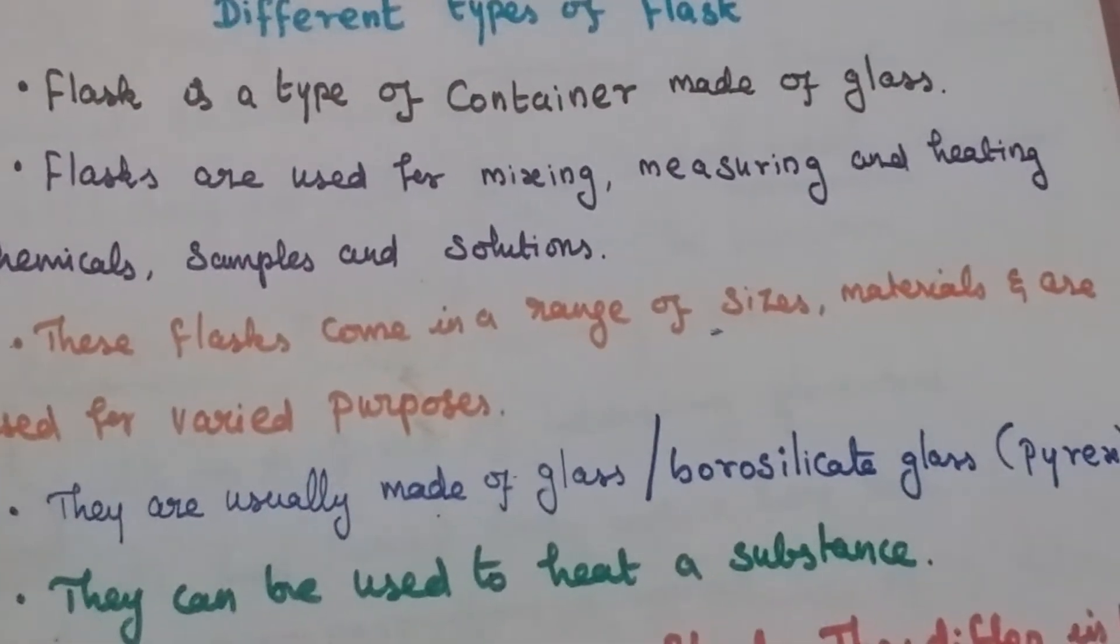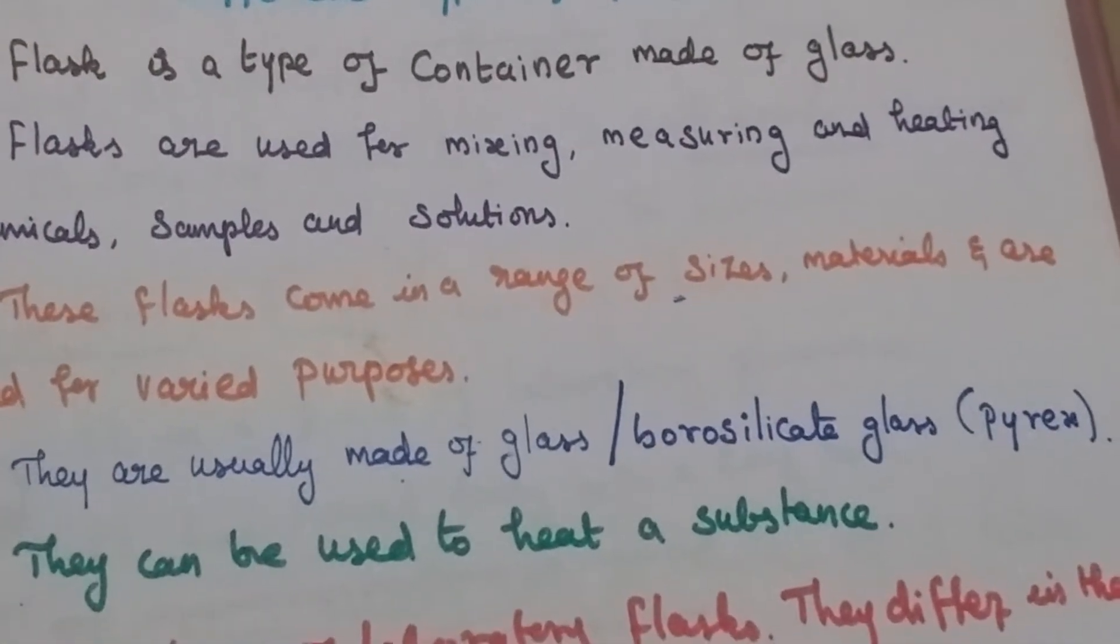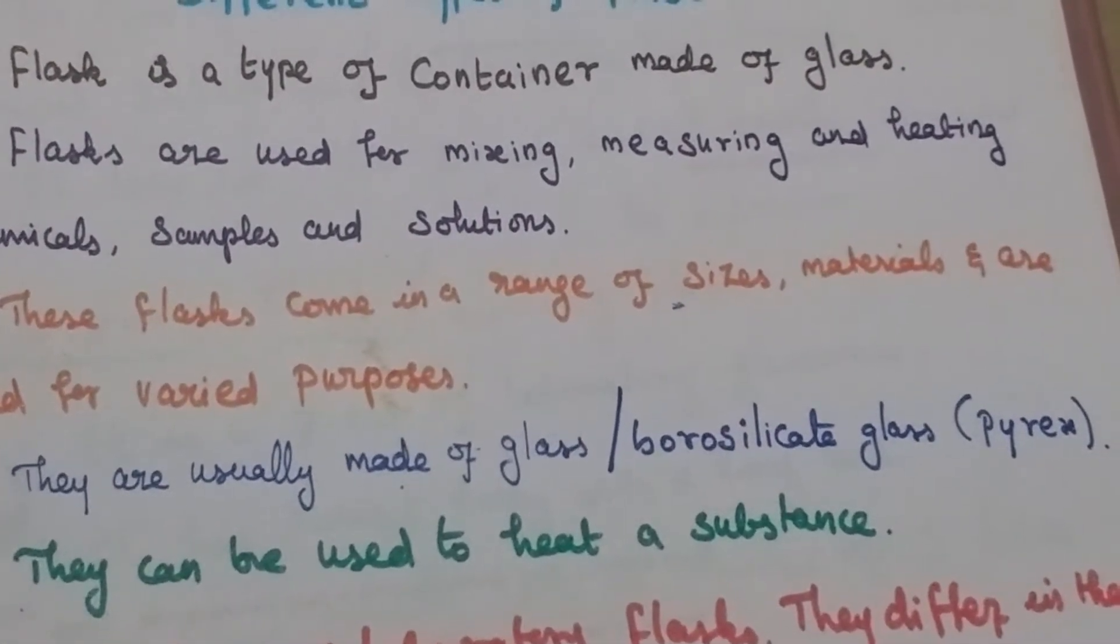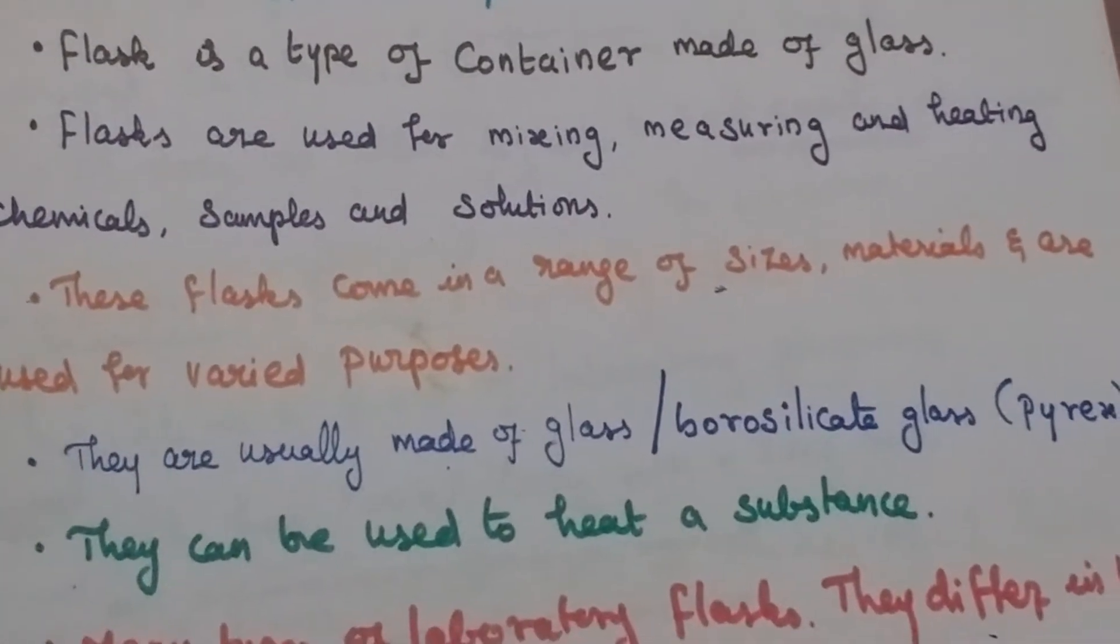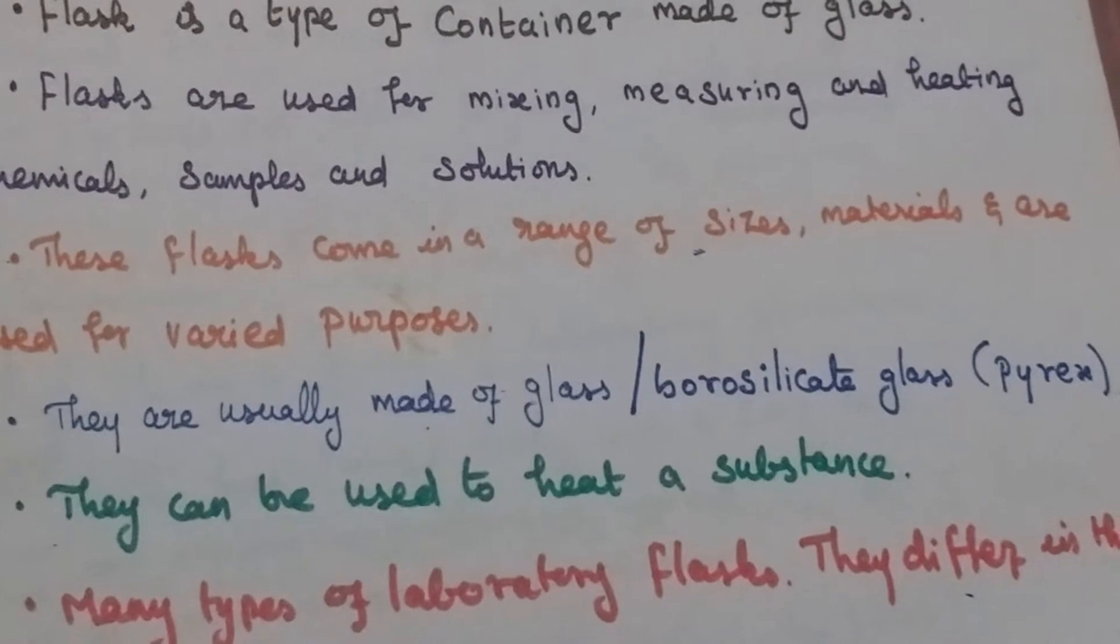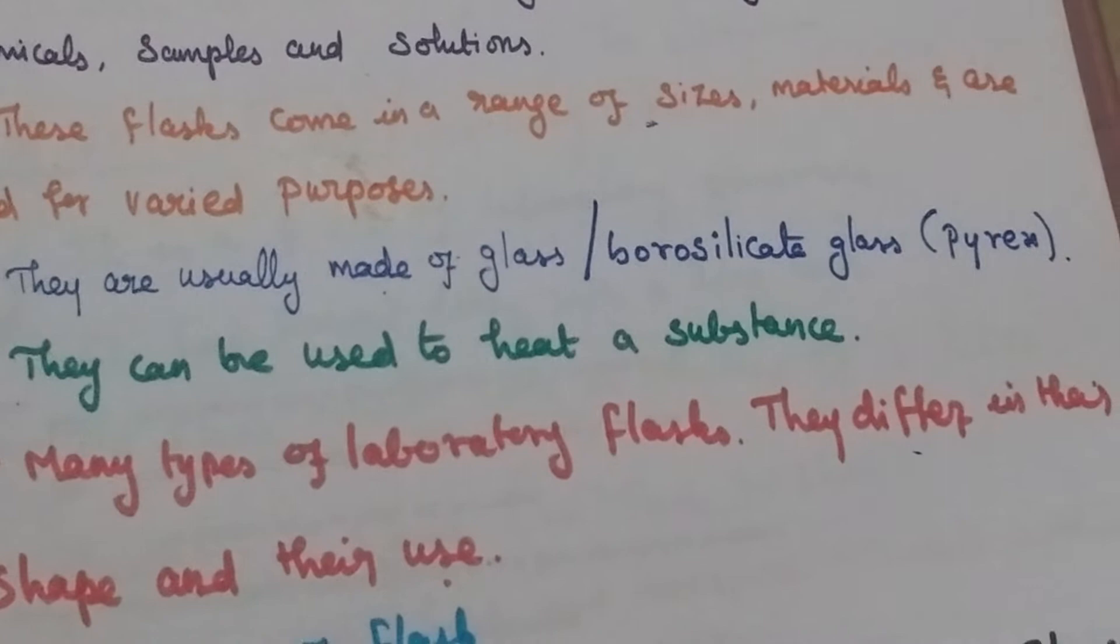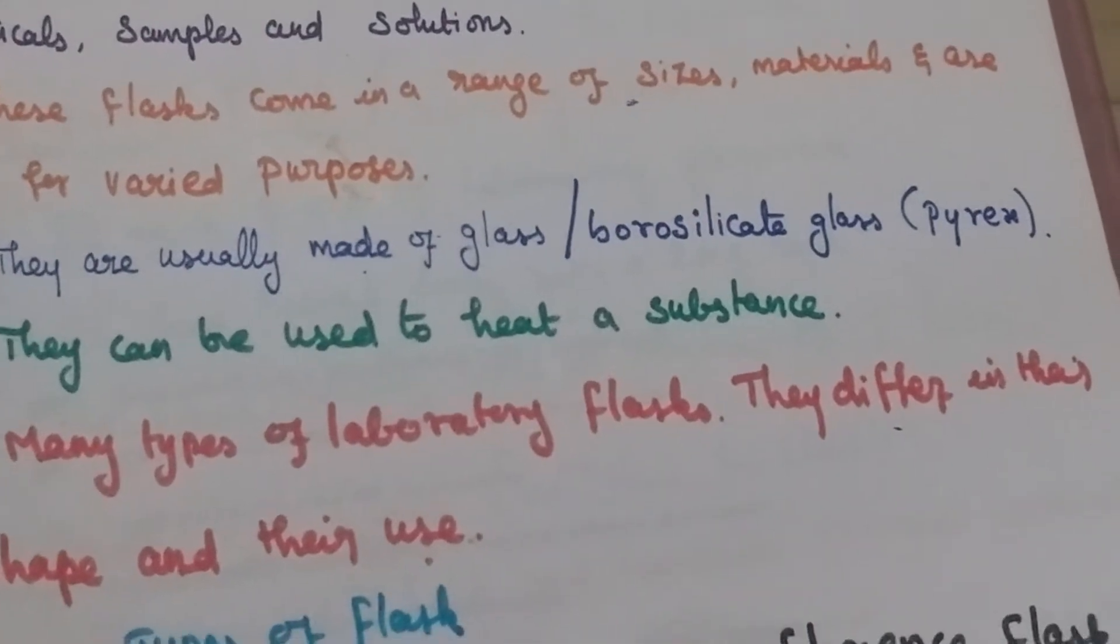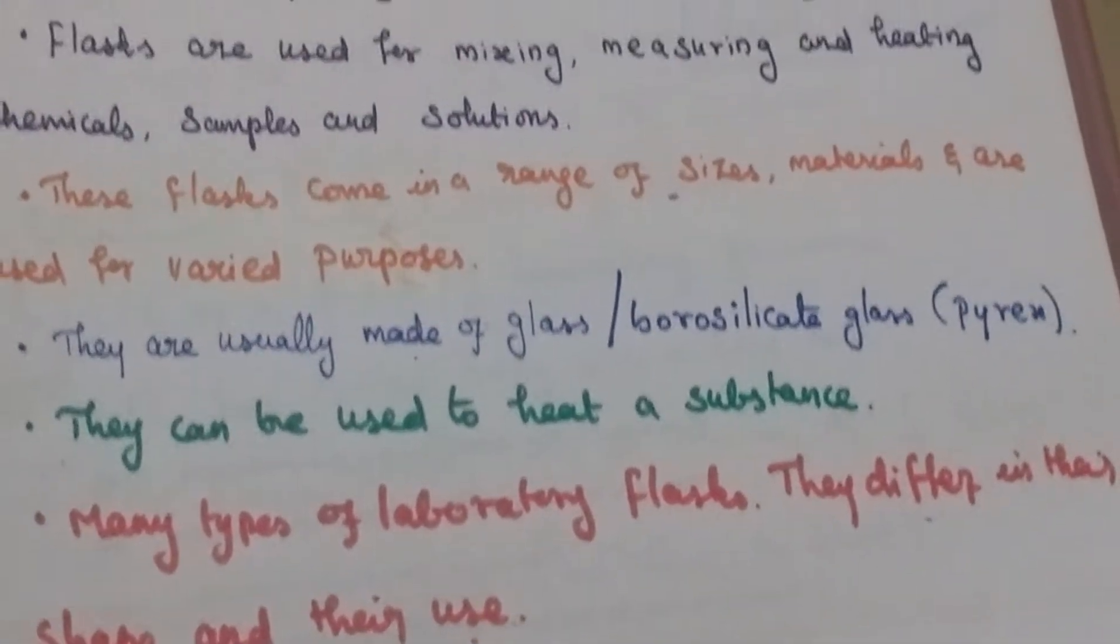These flasks come in a range of sizes, materials and are used for various purposes. They are usually made of glass, borosilicate glass, or plastic, and can be used to heat a substance. Many types of laboratory flasks exist. They differ in their shape and their usage.